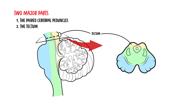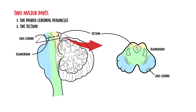The paired cerebral peduncles consist of the crura cerebrae, or the crus cerebrae, and the tegmentum. The crus cerebrae and the tegmentum are separated by the substantia nigra.